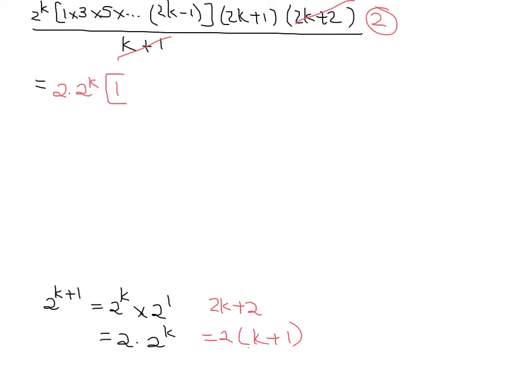Into, and then I've got 1 by 3 by 5 by 2k minus 1, and forget the square brackets, 2k plus 1, which is correct. It's the odd numbers. So that's what I've got on the right-hand side. That's exactly it.